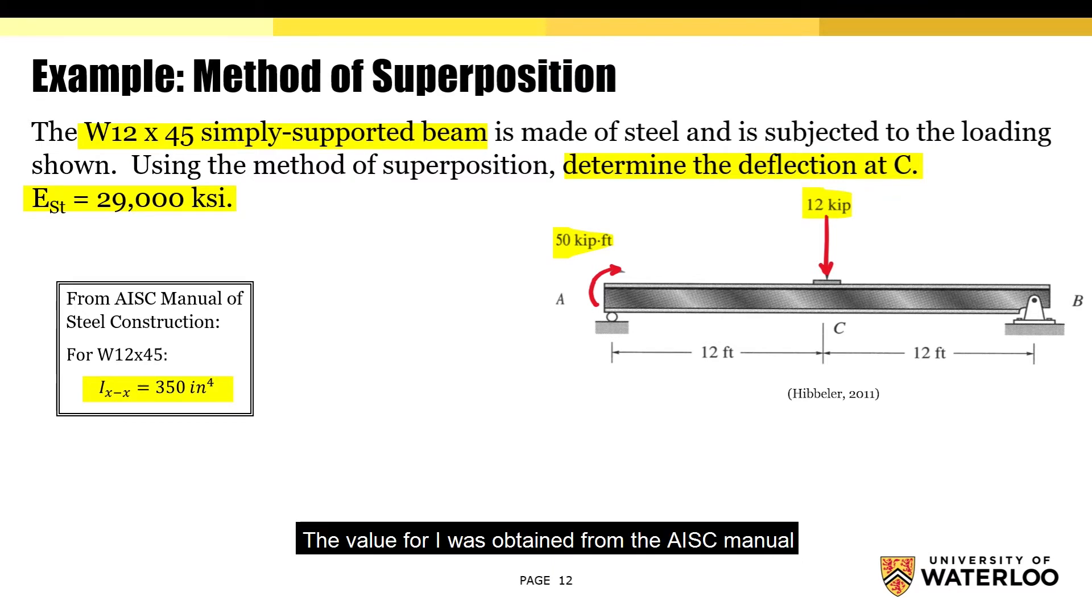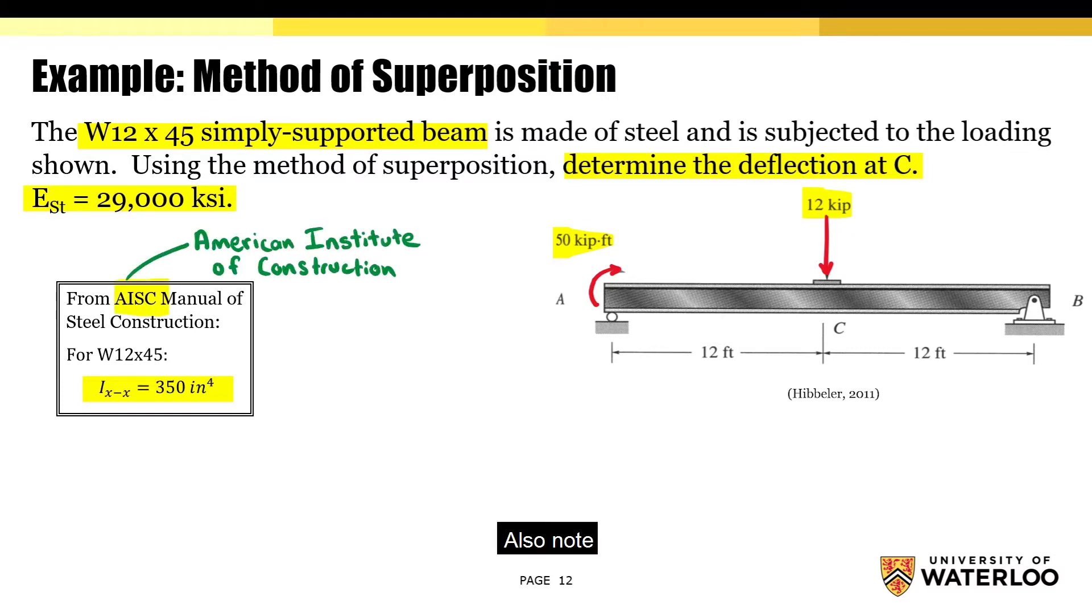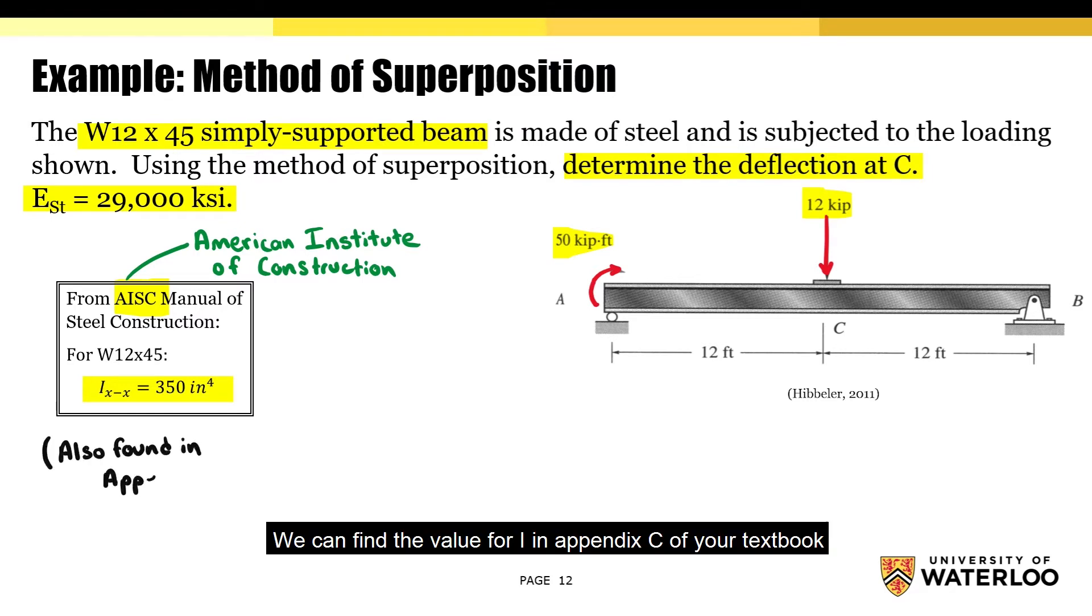The value for I was obtained from the AISC manual, where the acronym stands for American Institute of Steel Construction. Also note, we can find the value for I in appendix C of your textbook. I'll begin solving the problem on the following slide.